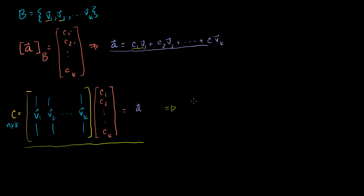We can rewrite this expression. C is just a matrix with our basis vectors as columns. This is just the coordinates of a with respect to the basis b. So C times the vector that has the coordinates of the vector a with respect to the basis b is going to be equal to a.